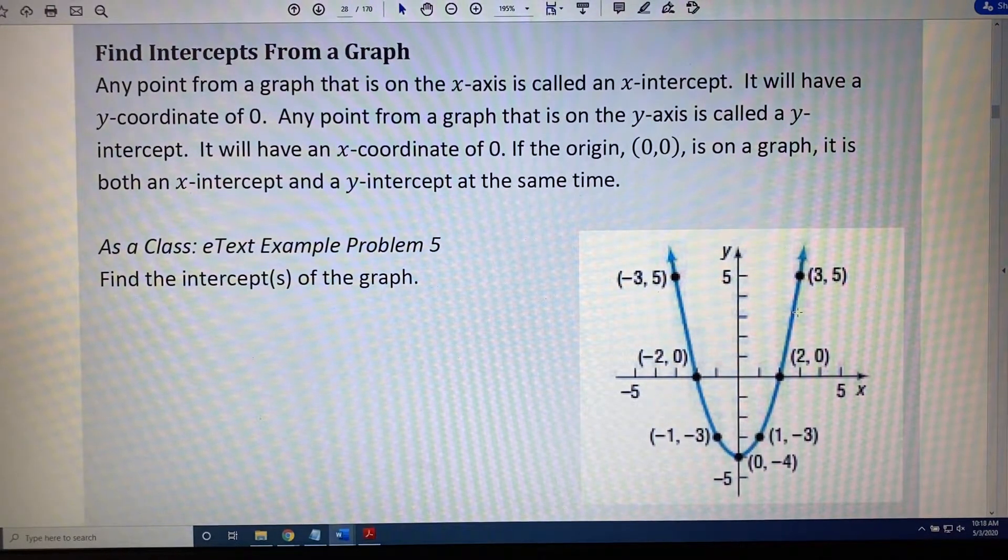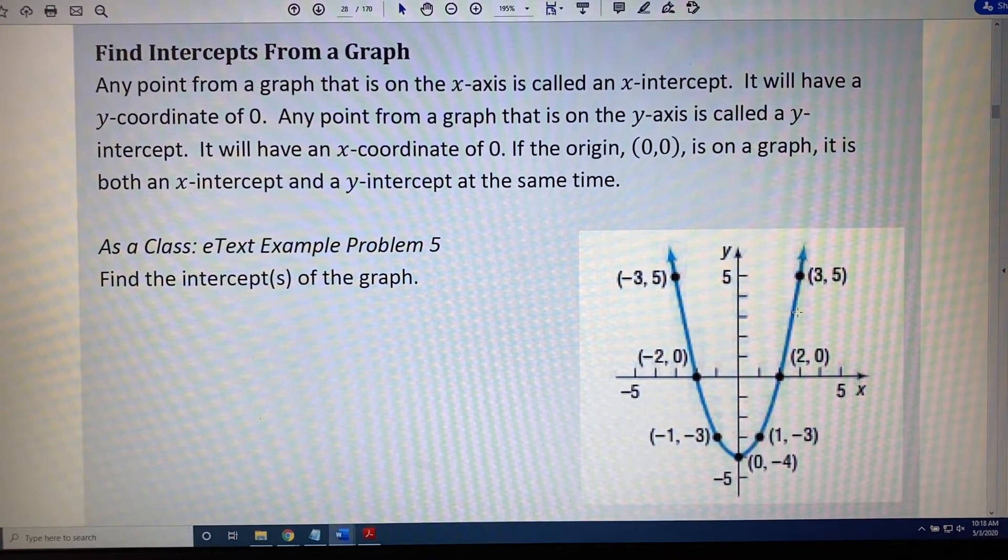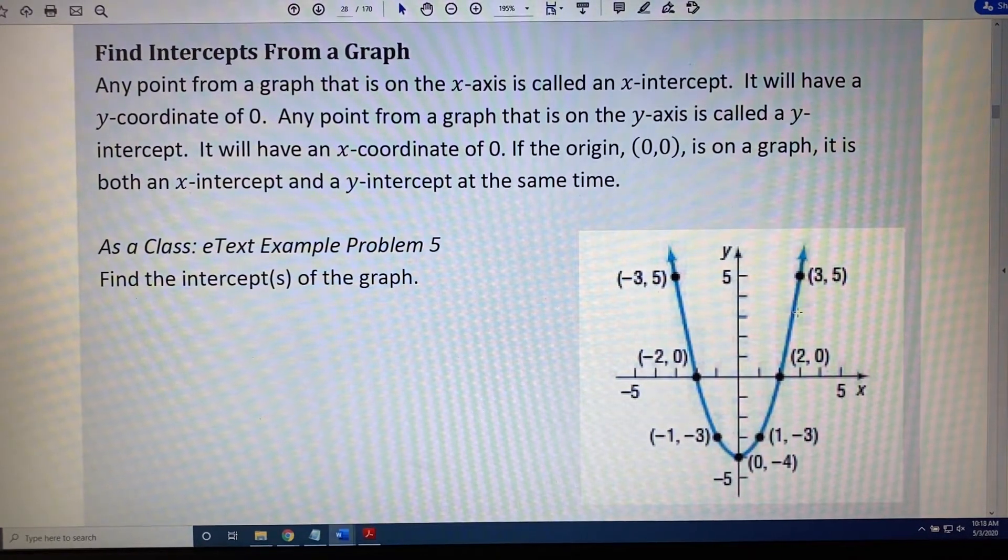The topic of this video is finding intercepts from a graph. Any point from a graph that is on the x-axis is called an x-intercept. It will have a y-coordinate of 0. Any point from a graph that is on the y-axis is called a y-intercept. It will have an x-coordinate of 0.